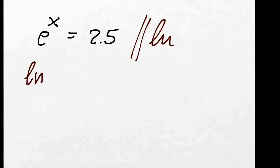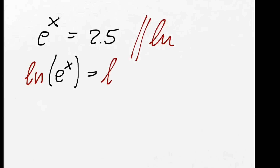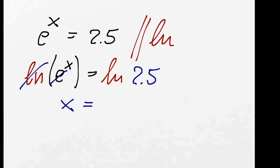Let's use another one: e to the power of x equals 2.5. Well again we know e and ln are the inverse operations. So we take both sides ln: ln(e^x) equals ln(2.5). ln and e cancel out. We have x equals ln(2.5), and when we put that into a calculator we get 0.916.